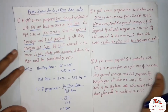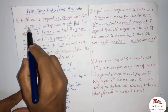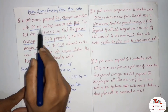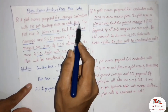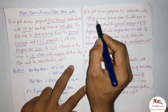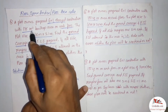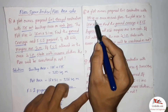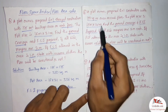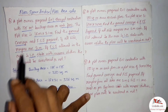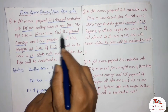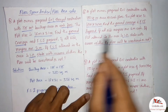Problem number four was: a plot owner proposed G+1 construction with 175 square meter built-up area on each floor. Here in this question it is 100 square meter on each floor instead of 175. The plot size here is 16 meter by 20 meter, whereas in problem four it was 16 meter by 21 meter.